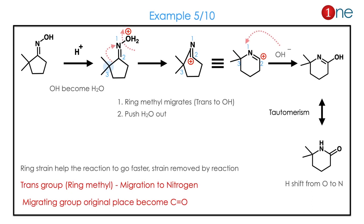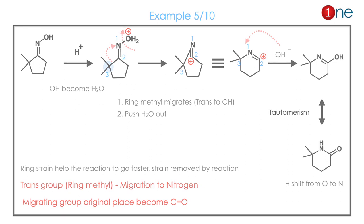In the next problem, you have a 5-member ring with an oxime. H+ attacks, you have water elimination, and the ring expands. A cation forms, OH minus attacks, and you have the final amide. The ring strain helps the reaction to proceed faster — this is a ring-strain-assisted reaction.